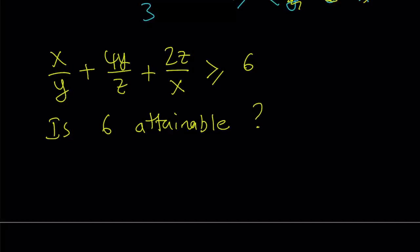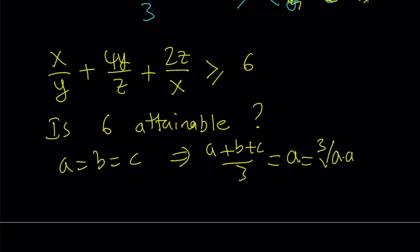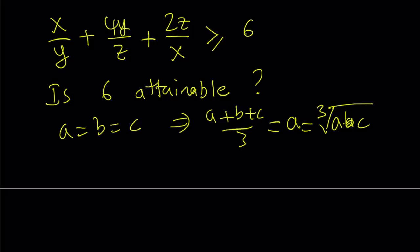By AM-GM, it is attainable because if A equals B equals C, then our inequality turns into A plus B plus C over 3. I can replace B and C with A. That gives me A. And that is the cube root of A, A, A. Their cube root, the cube root of their product is going to be A. So in order for that inequality to turn into an equation, they all have to be equal.